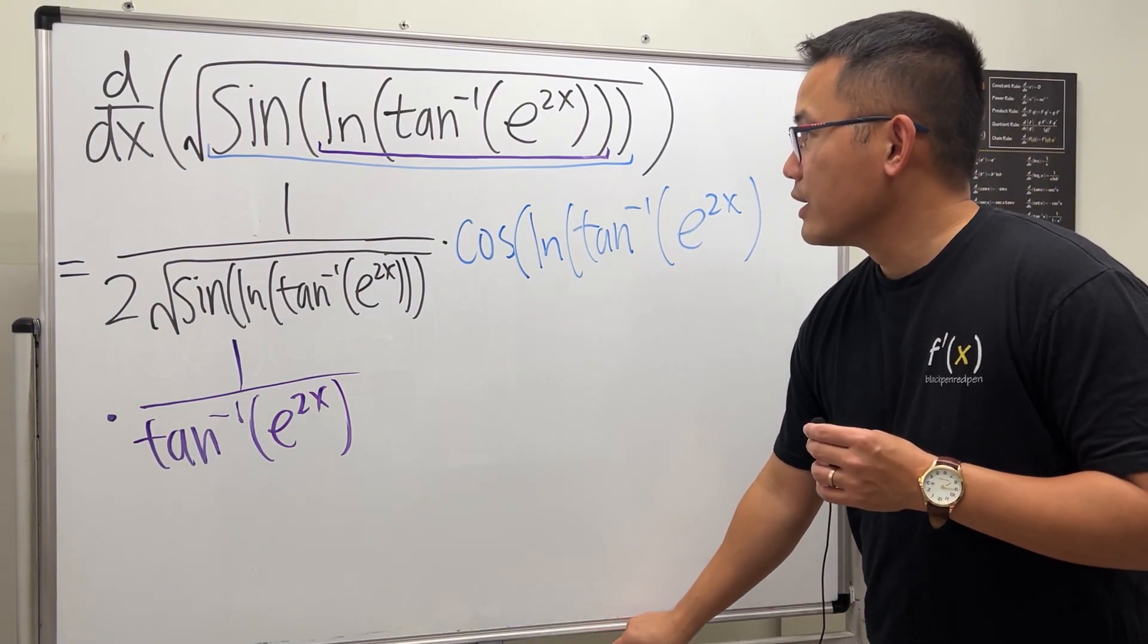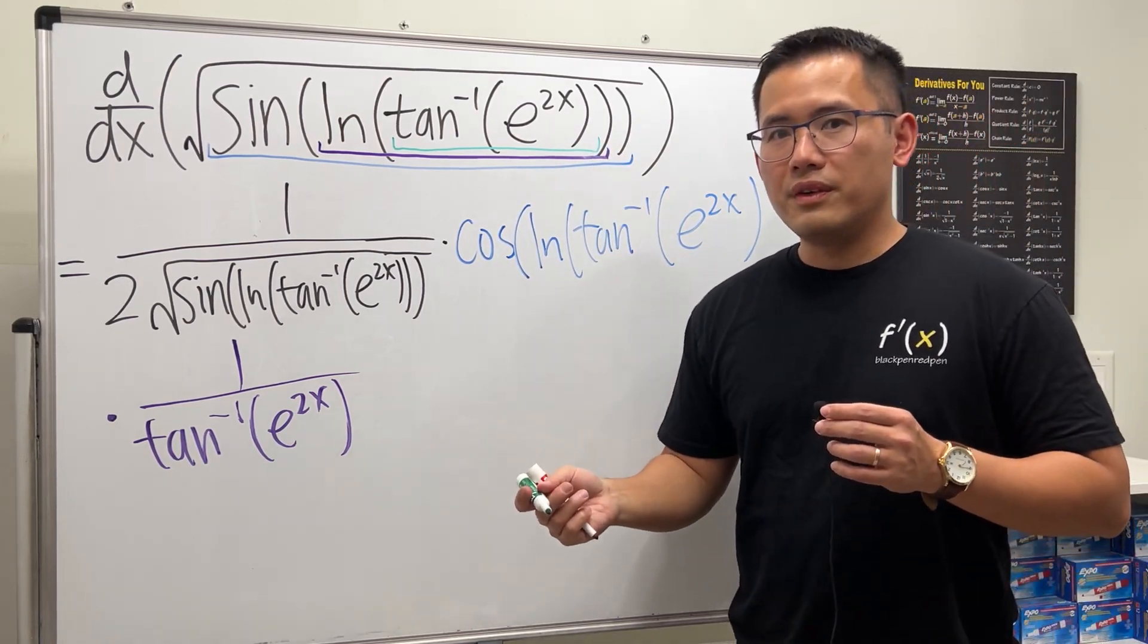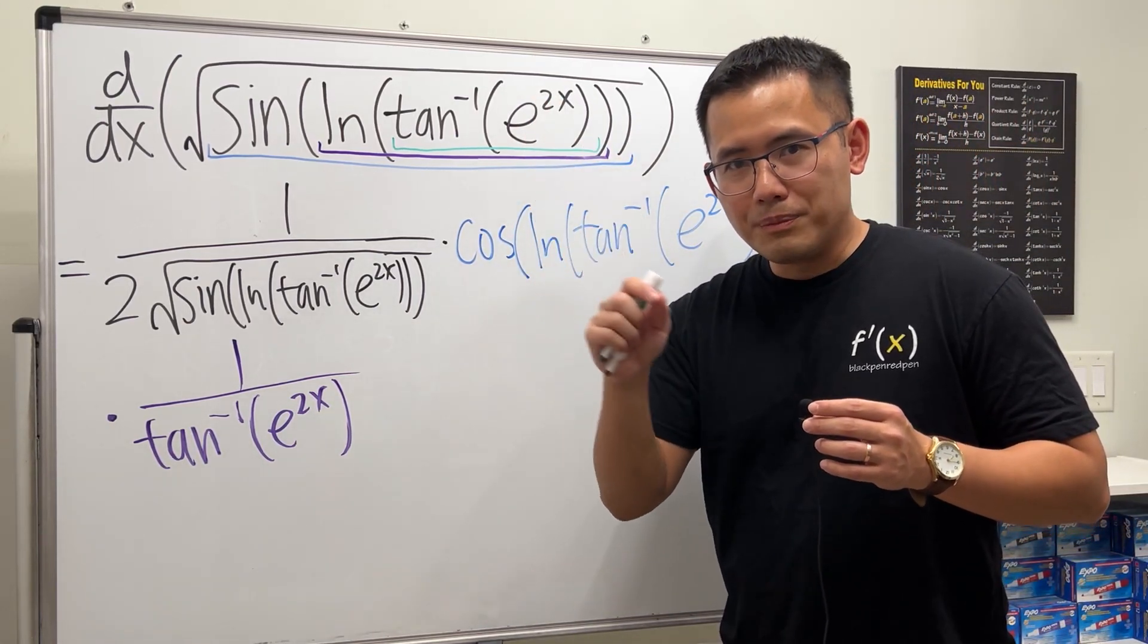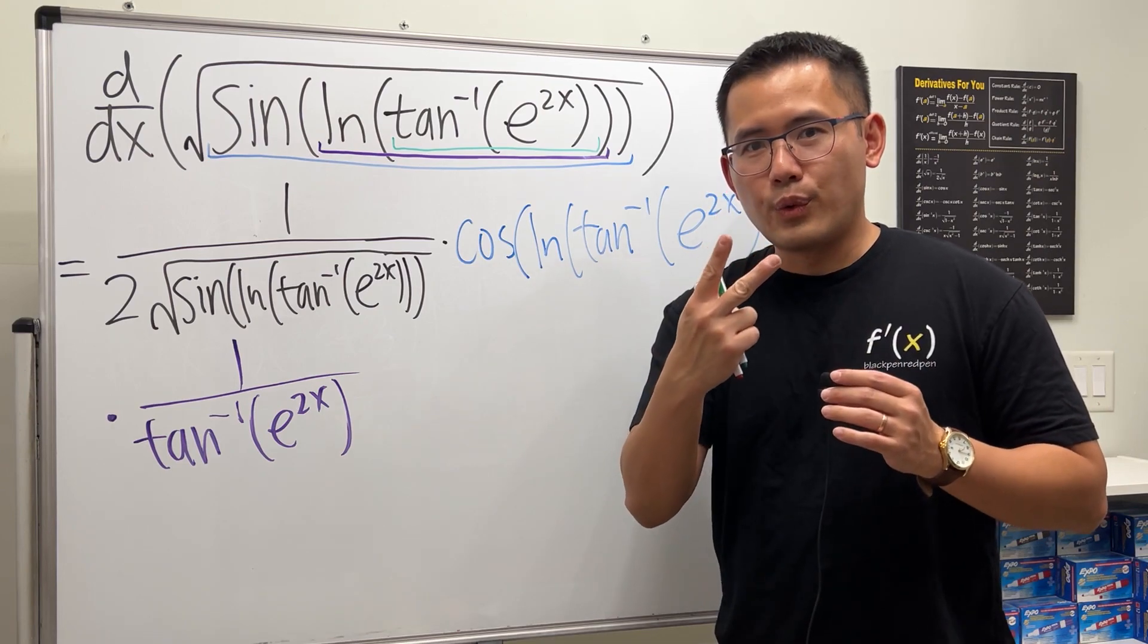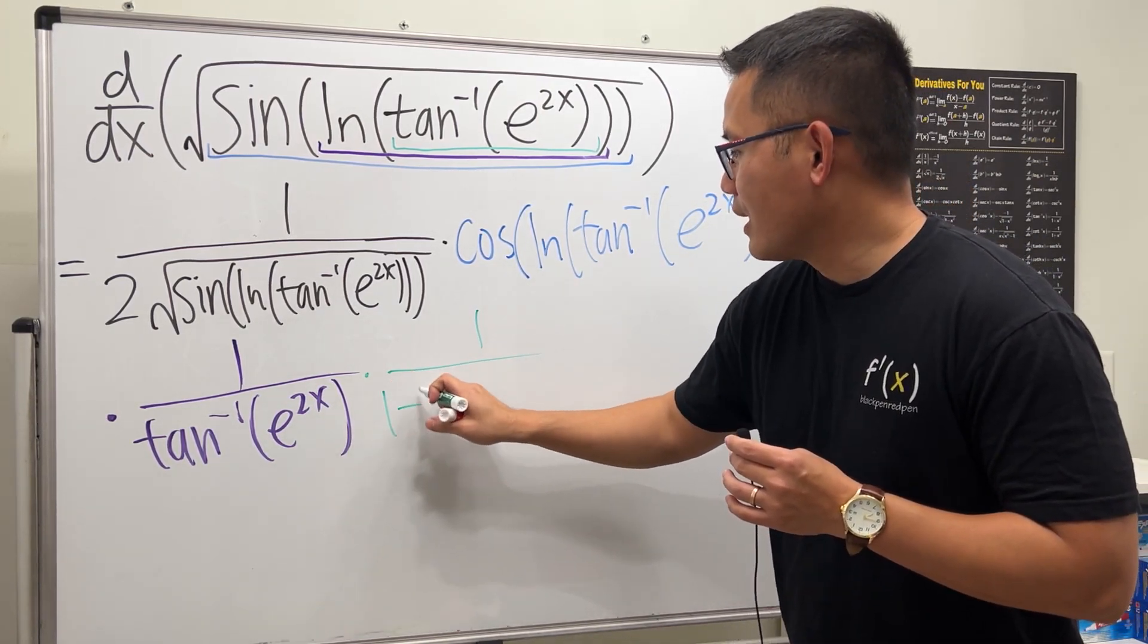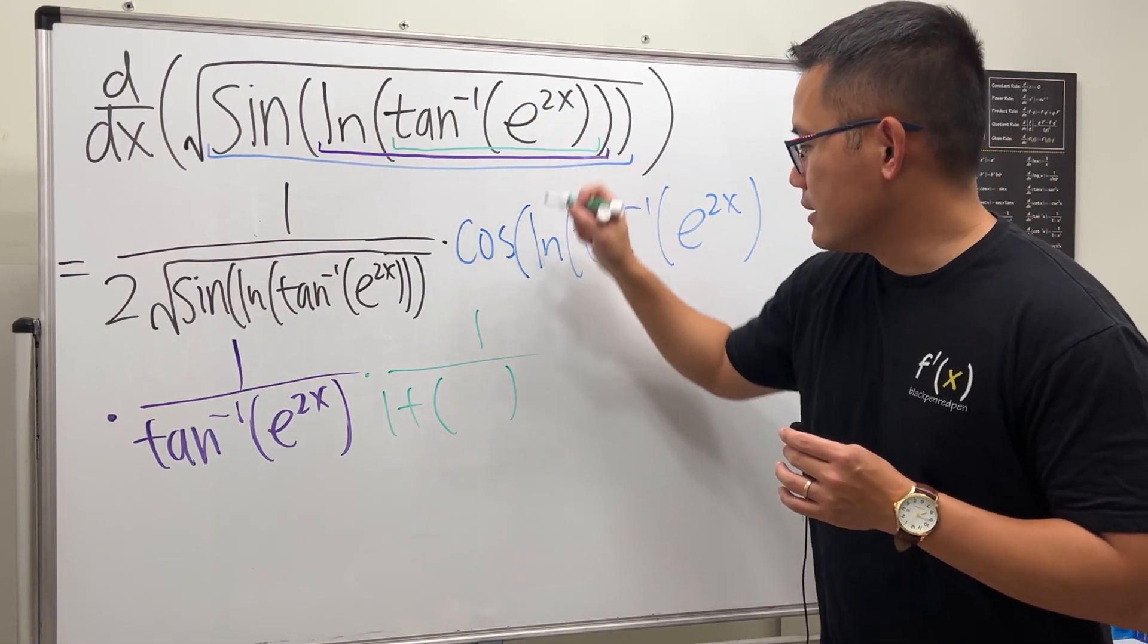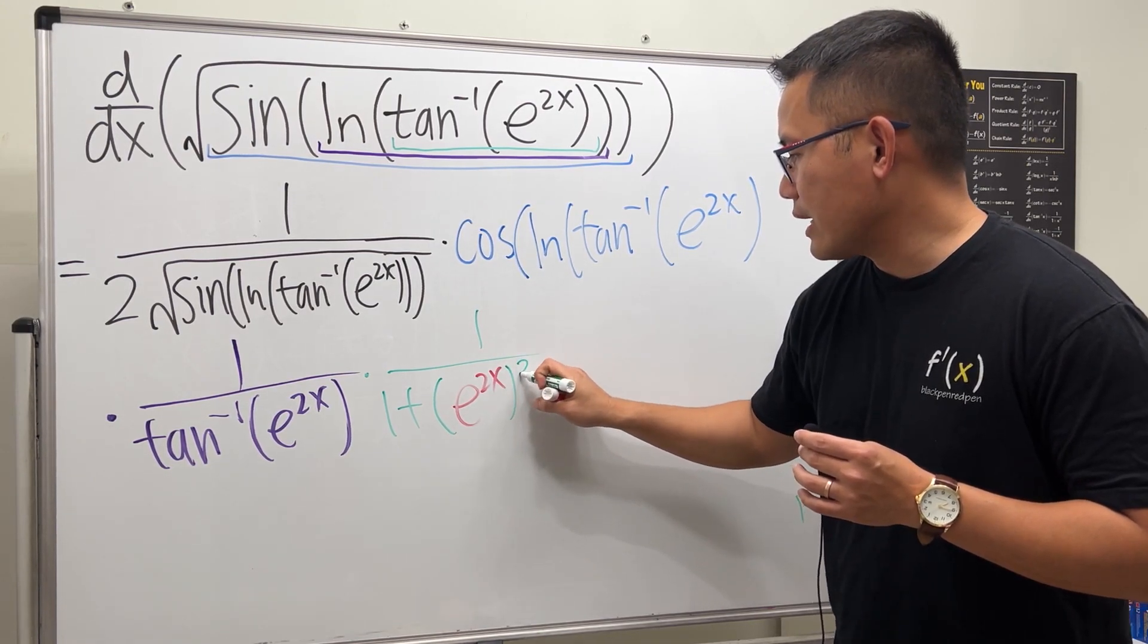And then next, we are going to differentiate this thing here. And the derivative inverse tangent is 1 over 1 plus that inside thing squared. So we multiply by 1 over 1 plus this thing squared. So parentheses inside is the e to the 2x. And then we have to square that.